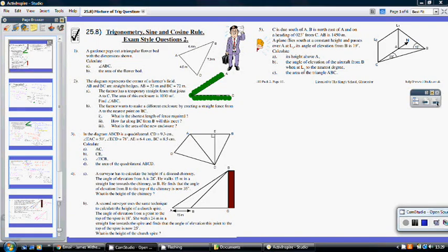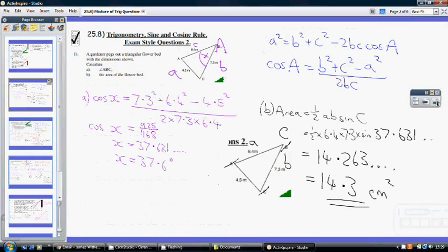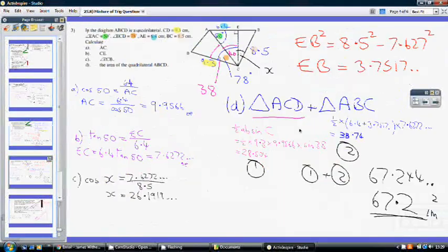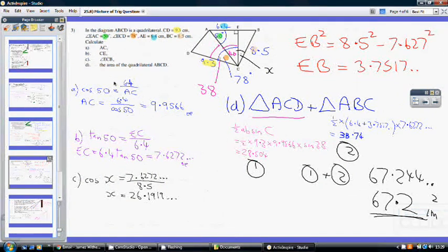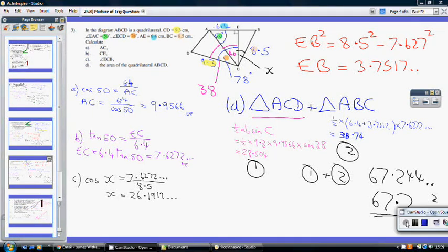So, I'm just about to go over question 3. So, for part A, we've been asked to work out the length from A to C. Now, looking at the right triangle, A, E, C, we know this angle here is 50, and this length is 6.4, and we want to work out the hypotenuse, A, C. So, we know the adjacent side, we want to work out the hypotenuse, so it's a right angle.